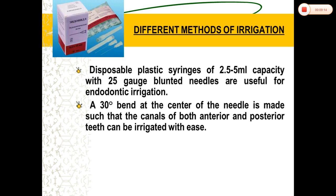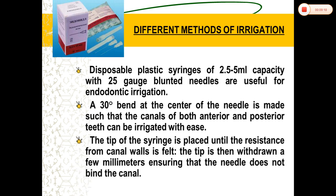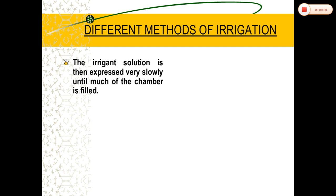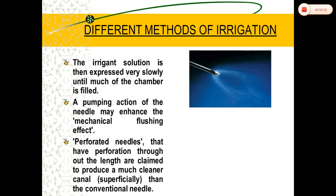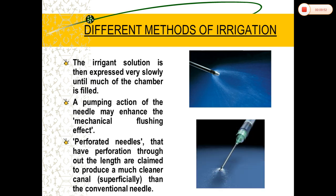Syringe irrigation uses a 25- or 27-gauge needle. The volume must be 2.5 to 5 ml. The needle must be bent at 30 degrees to ensure it enters the canal. The irrigant solution has to be delivered very slowly. The pumping action of the needle may enhance the mechanical flushing. Perforating needles that have perforations throughout their length are claimed to produce a much cleaner canal compared to conventional methods.